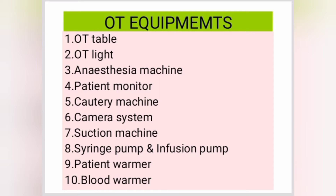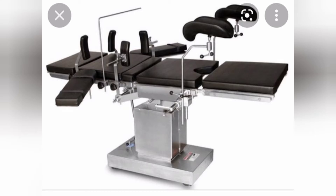Our very first and very basic OT equipment is the OT table. As you can see in the picture, it is the equipment on which the patient lies down for surgery. The table shown in this picture is a motorized OT table. Movement of different sections of the OT table are done as per the required position for surgery using a remote or panel buttons. OT tables come with different types of attachments and are used as per surgical requirements.